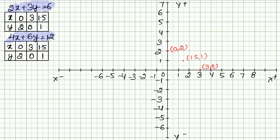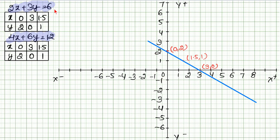Since the coordinates are the same for both equations, only one line will be drawn. As mentioned in the introduction, when there is only one line for both equations, that means both equations have infinitely many solutions. Any point on this line satisfies both equations — the left-hand side equals the right-hand side. Therefore, both equations have infinitely many solutions.